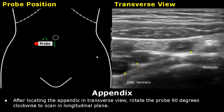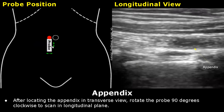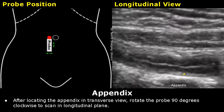After locating the appendix in transverse view, slowly rotate the probe 90 degrees clockwise to scan in the longitudinal plane. This is the image of the appendix in longitudinal plane — this tubular structure is the appendix. Slightly adjust the probe in this area to scan the end of the appendix as well. Here we can see the blind end of the appendix.